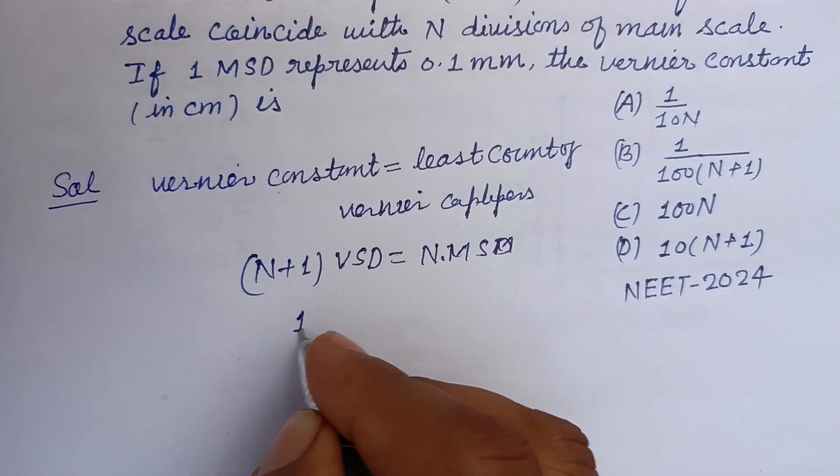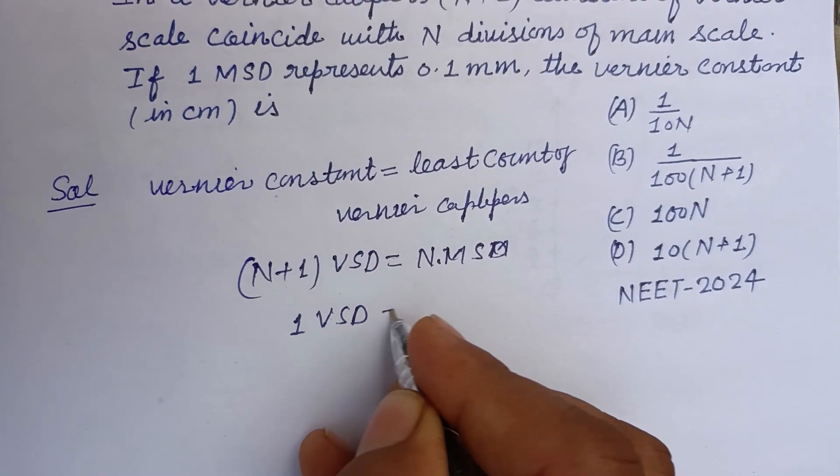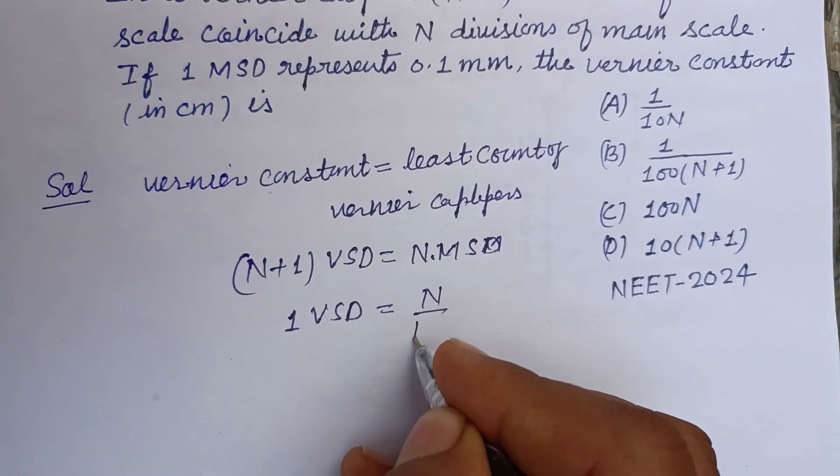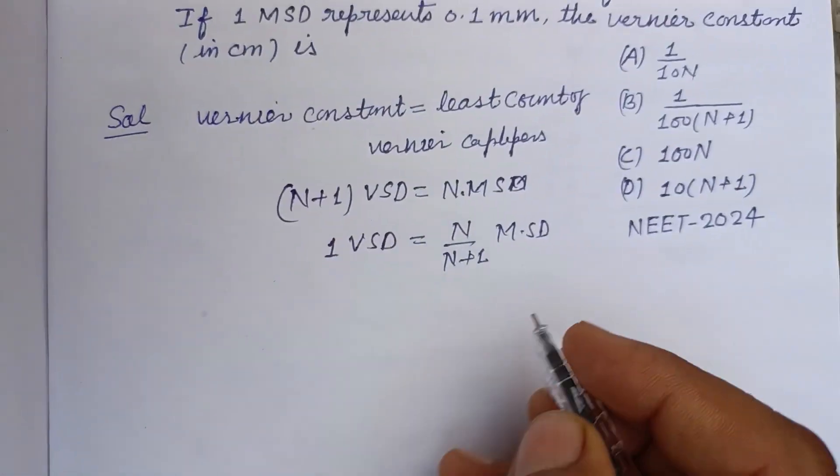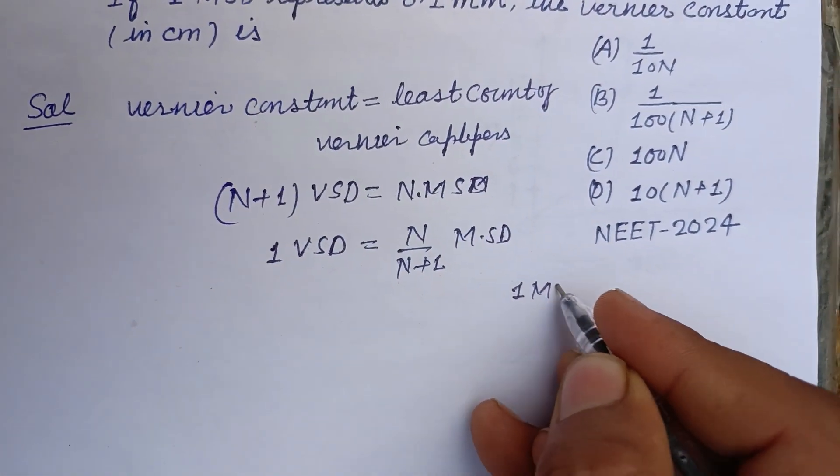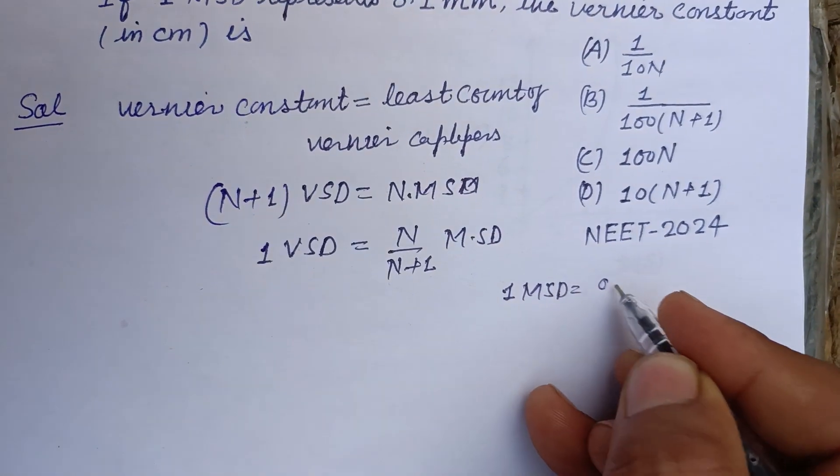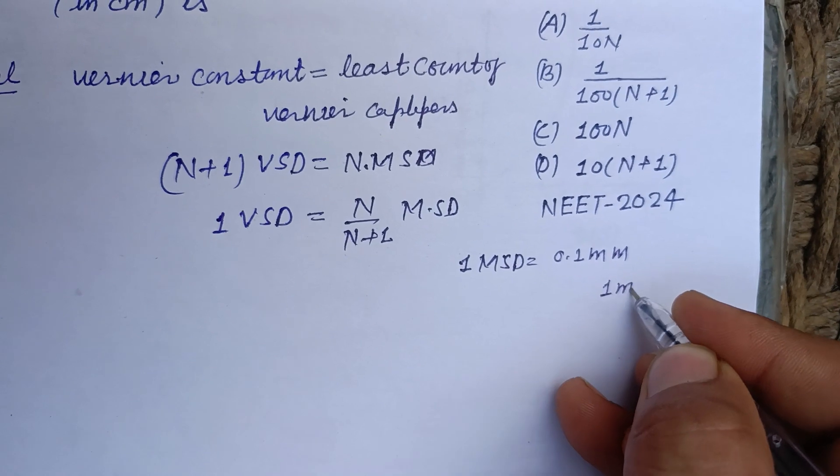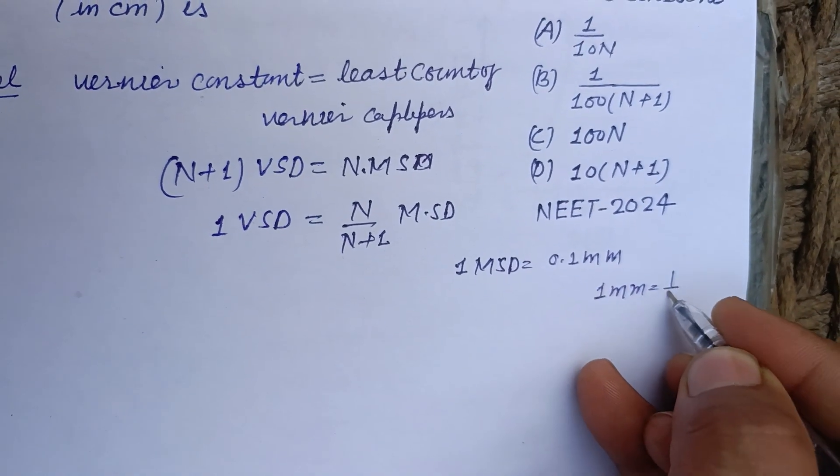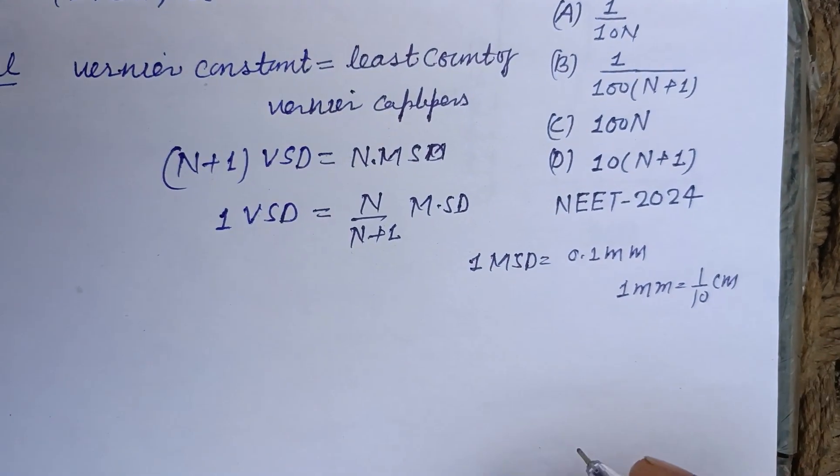So from here, 1 VSD is equal to N over N plus 1 MSD. And 1 MSD is given to us as 0.1 mm, and you know that 1 mm equals 1 upon 10 cm.